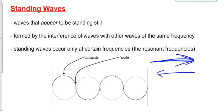Let's label a couple of parts of this standing wave. The part of the wave that is constantly going up and down — from crest to trough to crest to trough — the area of constructive interference, is what we call an antinode. The areas that are not moving, areas of complete destructive interference, we call nodes. Constructive interference: antinode. Destructive interference: node.